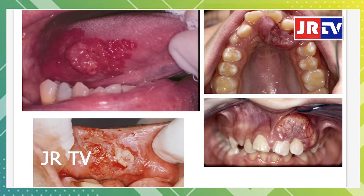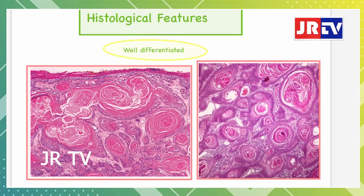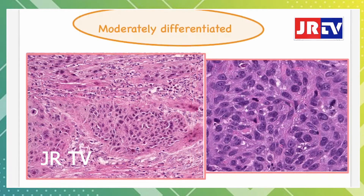The cauliflower-like growth has depressions, elevations, and crevices. Food particles will stagnate or impact onto these grooves and crevices on the superficial layer of the squamous cell carcinoma.